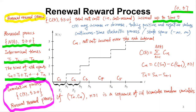tn is the time of the nth event. For example, s4 equals t1 + t2 + t3 + t4. In general, the time of the nth event, sn, equals t1 + t2 + ... + tn. Now, ct is the total net cost by time t, and cn is the net cost incurred over the nth interval.